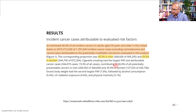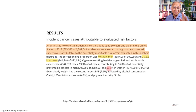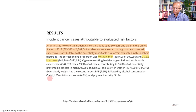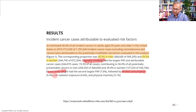Smoking's attributable fraction contributed to 50.6% of all potentially preventable cancers in men and 39.9% in women. Excess body weight had the second largest PAF at 7.6%, followed by alcohol consumption, ultraviolet radiation, and physical inactivity. So ranked: 1) smoking, 2) excess body weight, 3) alcohol consumption, 4) UV radiation, 5) physical inactivity.